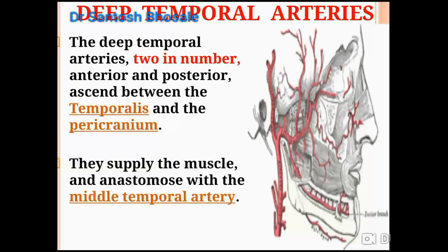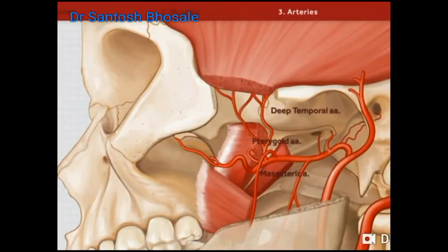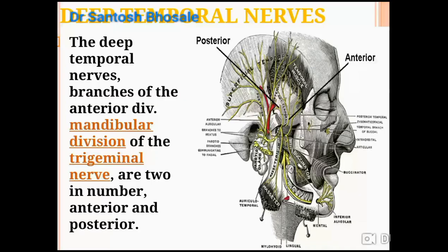Coming to the blood supply, there are deep temporal arteries — two in number. They are branches of the second part of the maxillary artery given in the infratemporal fossa, and they have a variant anastomosis just beneath the temporalis muscle.